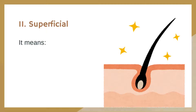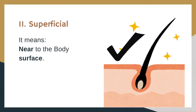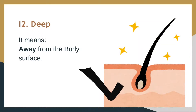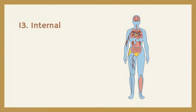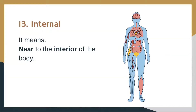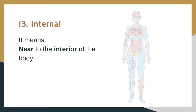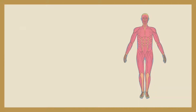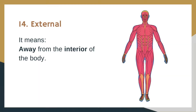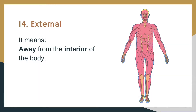Superior: it means towards the top of the head. Inferior: it means towards the sole of the foot. Superficial: it means near to the body surface. Deep: it means away from the body surface. Internal: it means near to the interior of the body. External: it means away from the interior of the body.